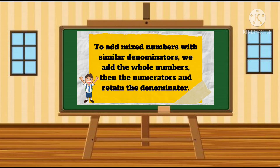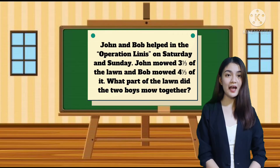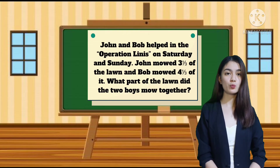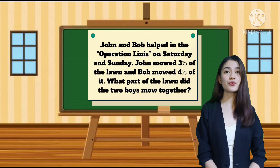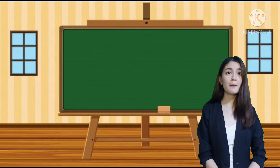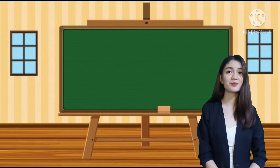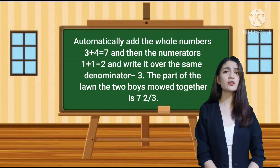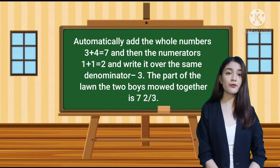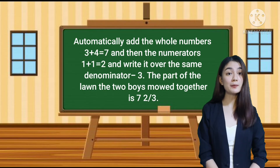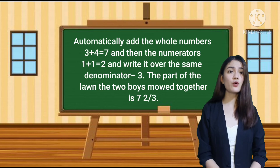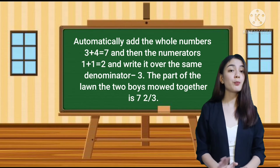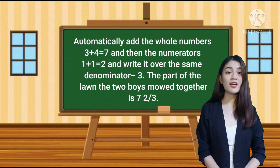To add mixed numbers with similar denominators, we add the whole numbers, then the numerators, and retain the denominator. What is asked? What are given? For example, 3 and 1 third and 4 and 1 third are mixed numbers with similar denominators, so we can add directly without finding the LCD. We add the whole numbers: 3 plus 4 equals 7, and the numerators: 1 plus 1 equals 2, written over the same denominator 3. The answer is 7 and 2 thirds.